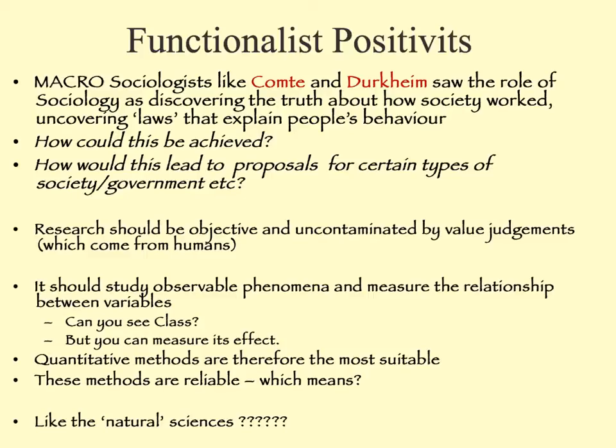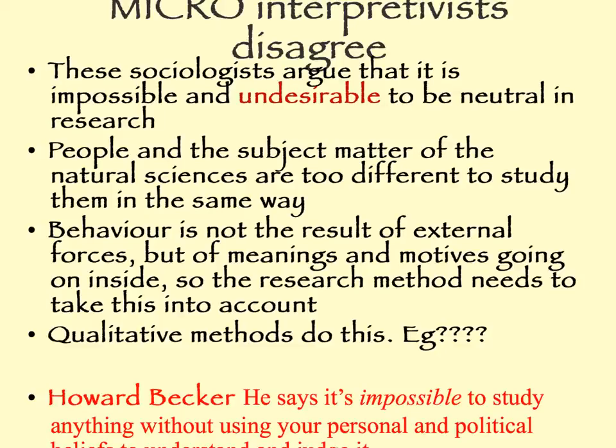Can you remind yourself what 'reliable' means in this context of sociological research? Micro interpretivists disagree. They say it's impossible and undesirable to be neutral in research — sociologists are human beings and it's actually impossible to be entirely objective. People should not be studied in the same way as in natural sciences, and behaviour is not the result of external forces but of the meanings and motives going on inside. The research method needs to take this into account to try and uncover those meanings and motives, and qualitative methods can do this.